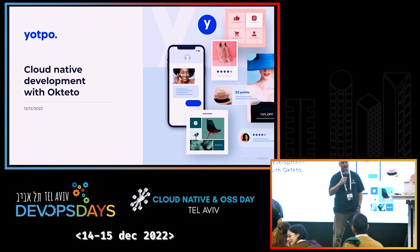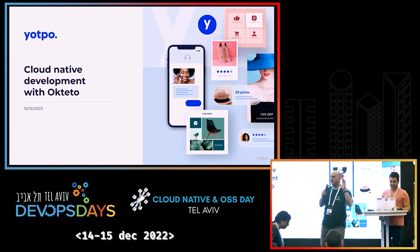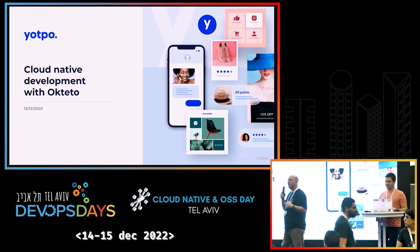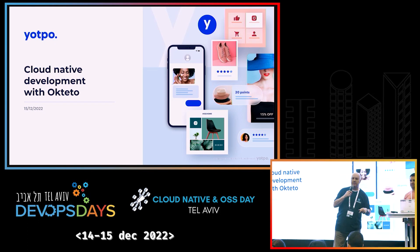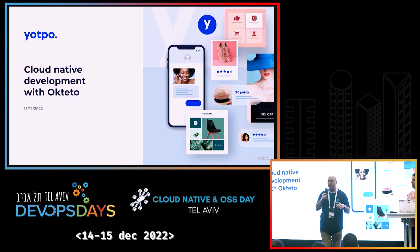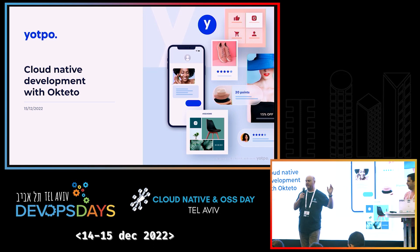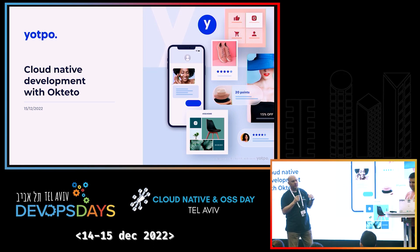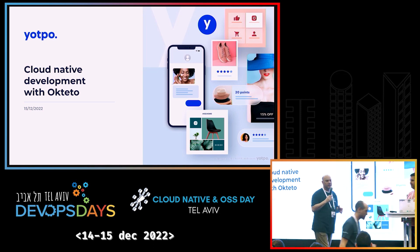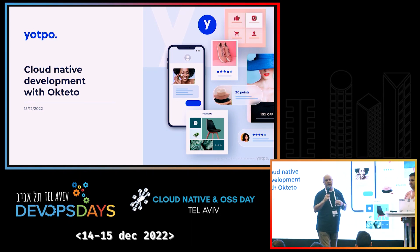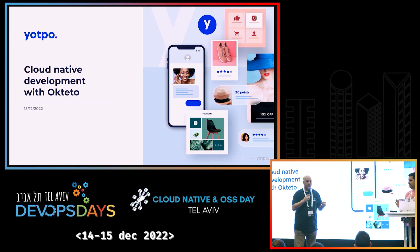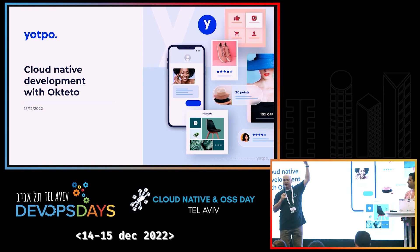Hello, everybody. I'm John May. I'm from Okteto. I'm hoping I came the furthest distance to come to DevOps Days here — all the way from Colorado in the USA. I came here because we have such great customers. Some of them here in Tel Aviv are monday.com, Yotpo, Cider, and Talon.